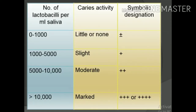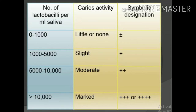If there are 0 to 1,000 colonies per ml of saliva, caries activity is little or none. 1,000 to 5,000 indicates slight caries activity (1+). 5,000 to 10,000 indicates moderate caries activity (2+). Greater than 10,000 indicates marked caries activity (3+ or 4+). We take the saliva sample, dilute it, spread it on selective agar, incubate it, and count colonies to determine caries activity.